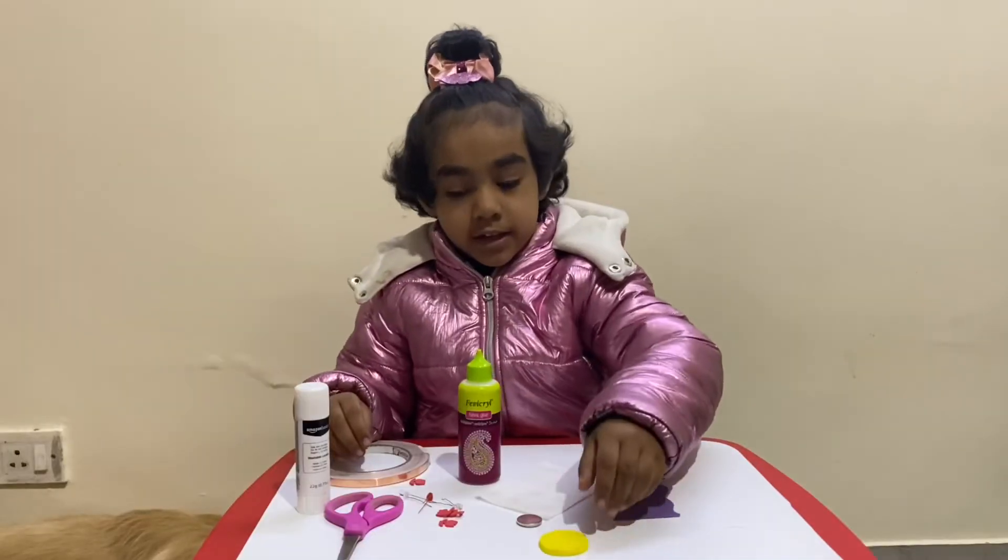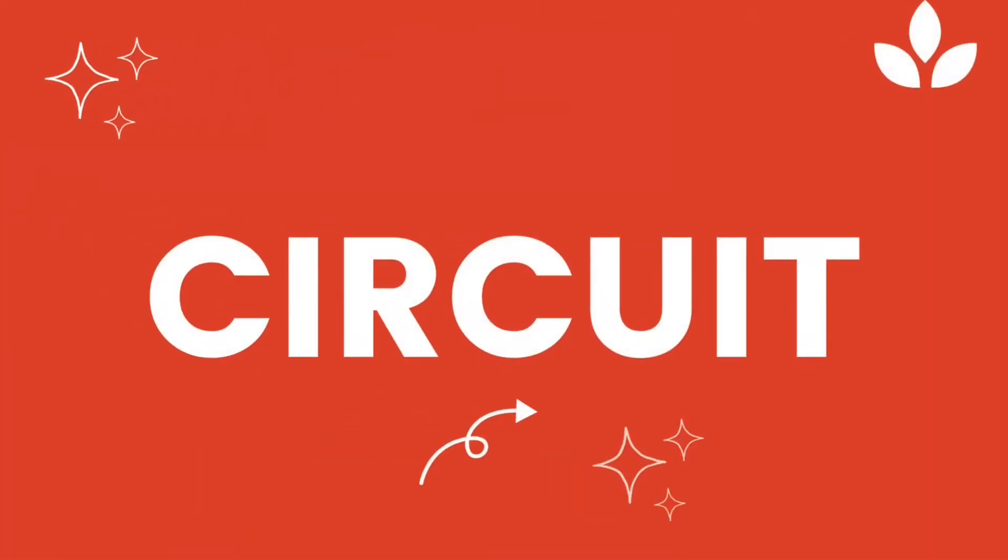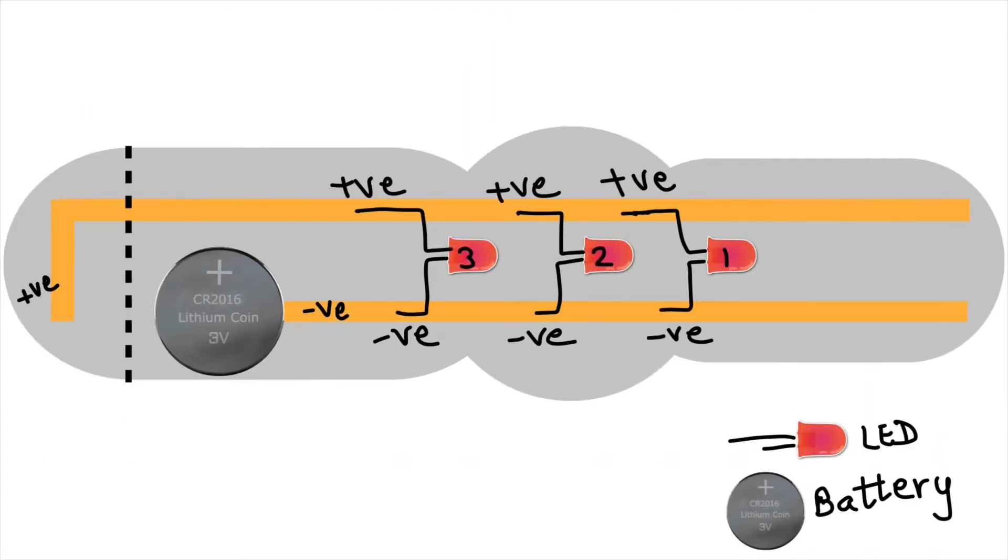To make the circuit, we have used the copper tape. This is the paper circuit tape and we have pasted it parallelly. So one tape is at the top of the bracelet and the other tape is at the bottom of the bracelet. Then we have placed the three LEDs - LED one, LED two, LED three - parallel to each other.